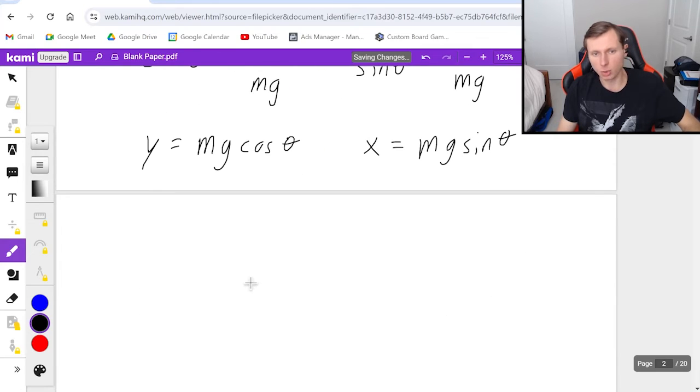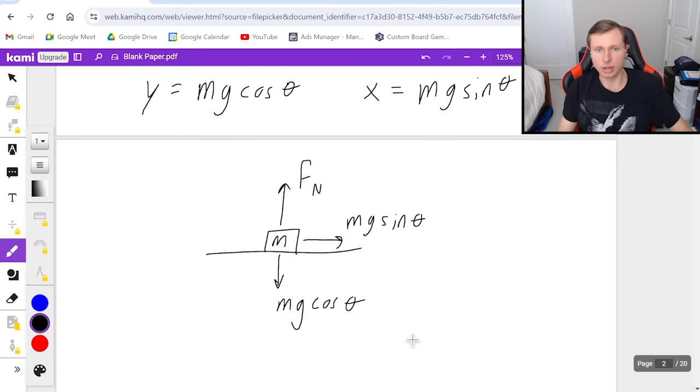Now what I'm going to do is I'm just going to quick redraw my picture with these new components. So I have normal force Fn still pointing up. In the x direction to the right I have mg sine theta and then going down I have mg cosine theta. So there's the setup.